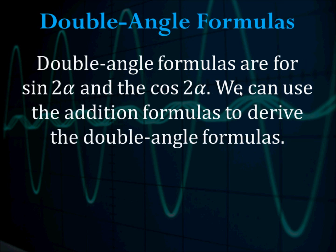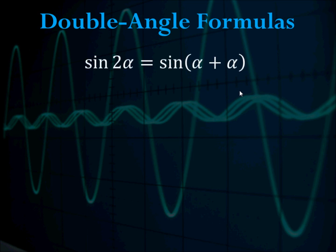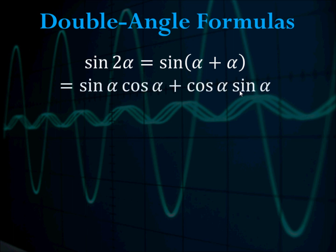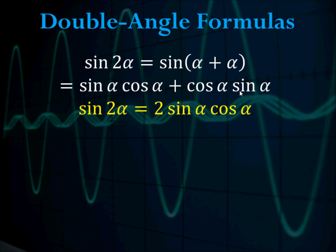The double angle formulas are for sine of 2a and the cosine of 2a. To derive those, we use the addition formulas from the previous section. Double angle means sine of 2a, 2 theta, 2 alpha. The sine of 2 alpha equals the sine of alpha plus alpha. Using the addition formulas, you can convert that into sine alpha cosine alpha plus cosine alpha sine alpha. Because those two are the same term, you can combine them, so sine of 2 alpha is 2 sine alpha cosine alpha. That is the double angle formula for sine.